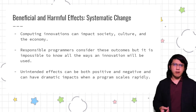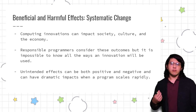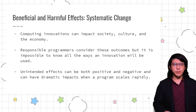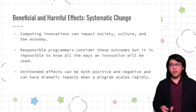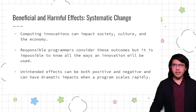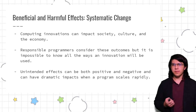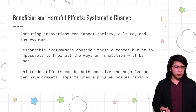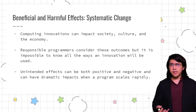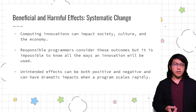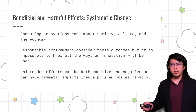One lens to help narrow these things down is thinking about changes in terms of society, culture, or the economy — maybe it's the way people behave, the expectations people have, or the way people do business. To be a responsible programmer, you should consider these outcomes as you develop a program, like a new social network or networking tool. But you also have to acknowledge that it's impossible to know all the different ways an innovation will be used. In addition, these effects — both positive and negative — can change dramatically as things scale way beyond your expectations.